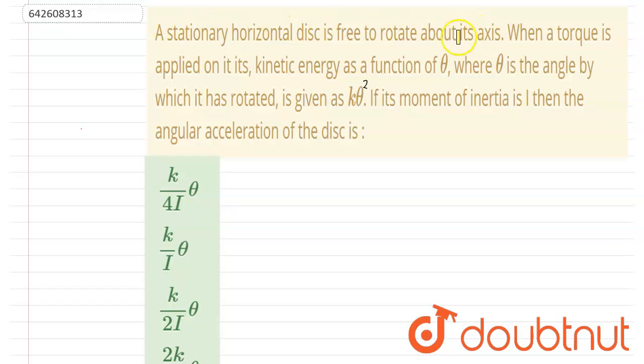A stationary horizontal disc is free to rotate about its axis. When a torque is applied on it, the kinetic energy as a function of theta, where theta is the angle by which it has rotated, is given by this. Its moment of inertia is I. Then, the angular acceleration of the disc is what is to be calculated.